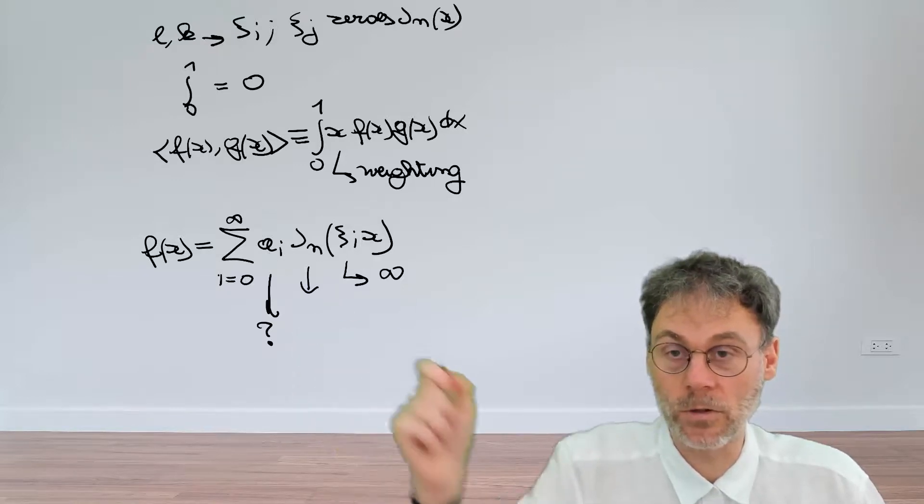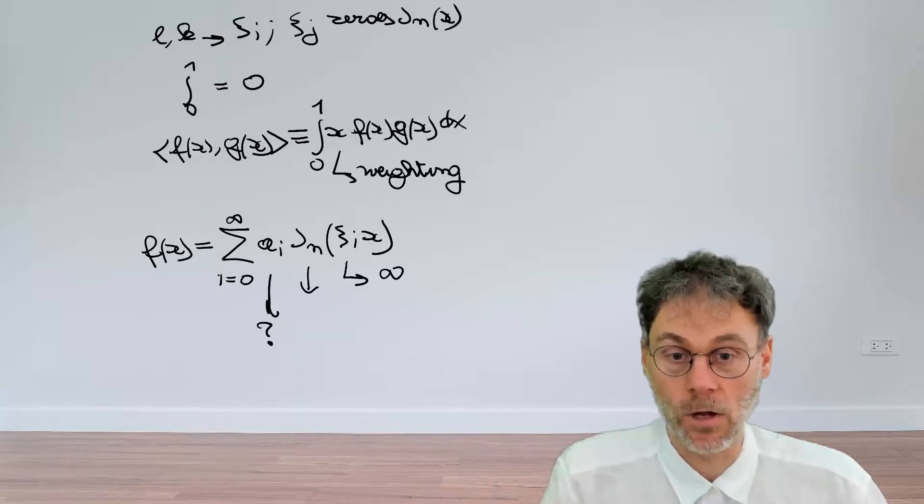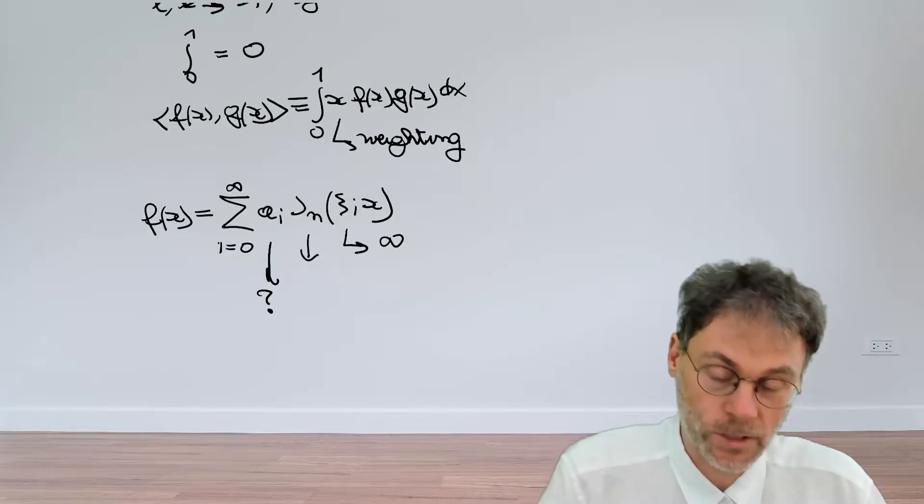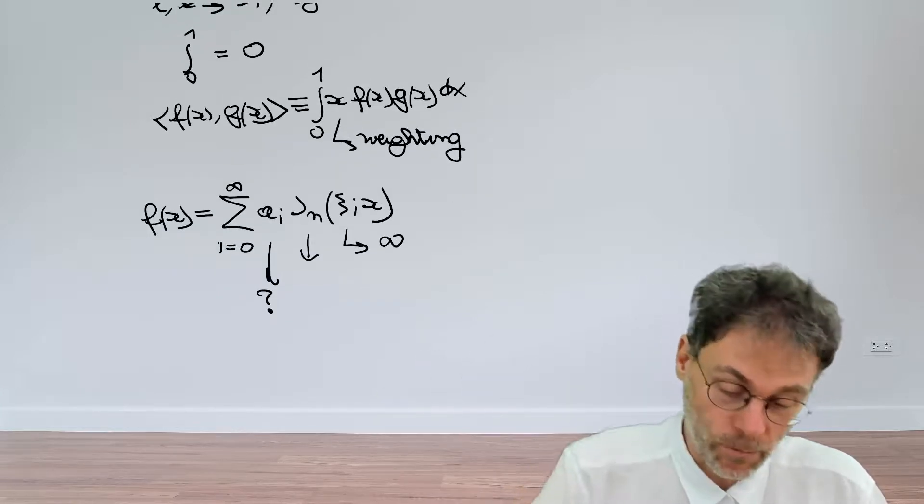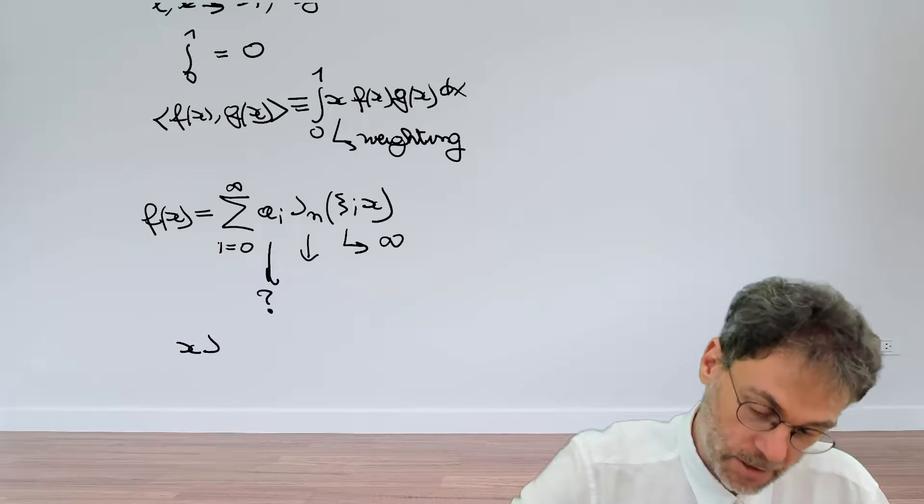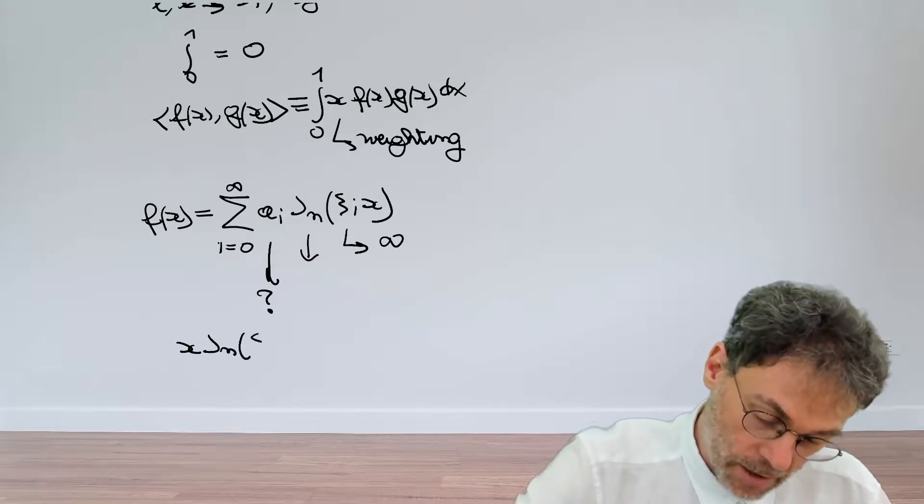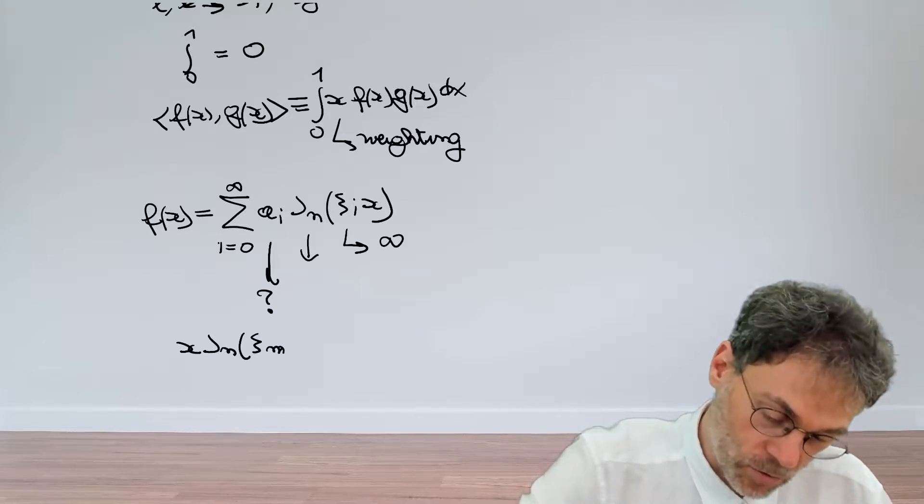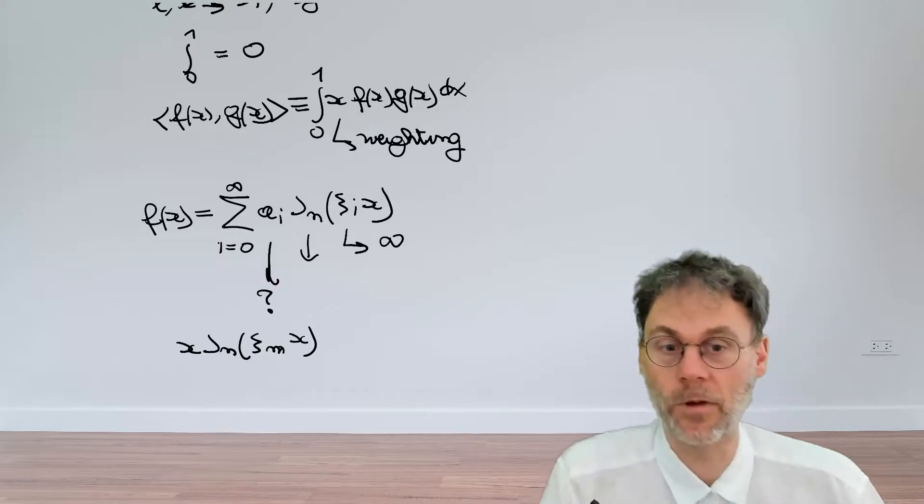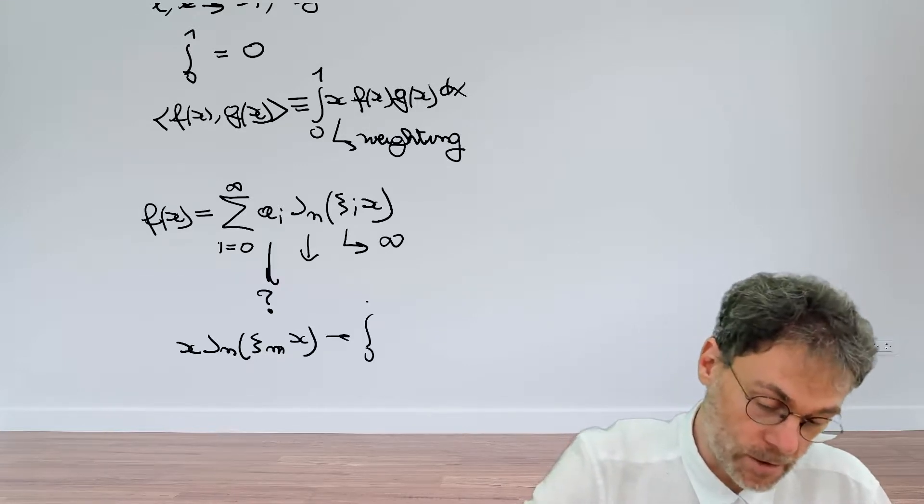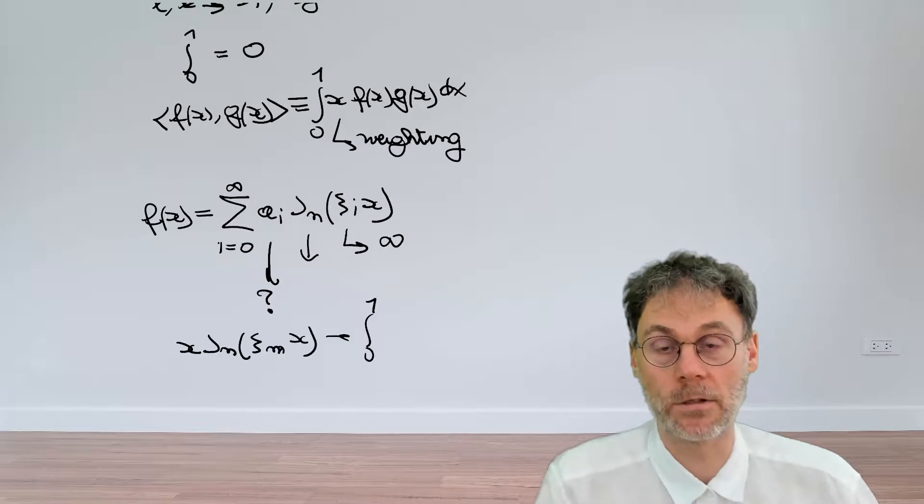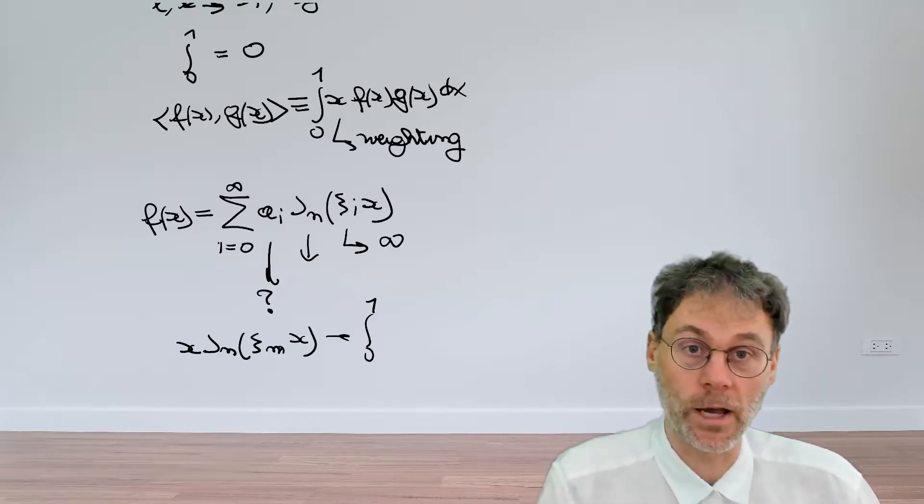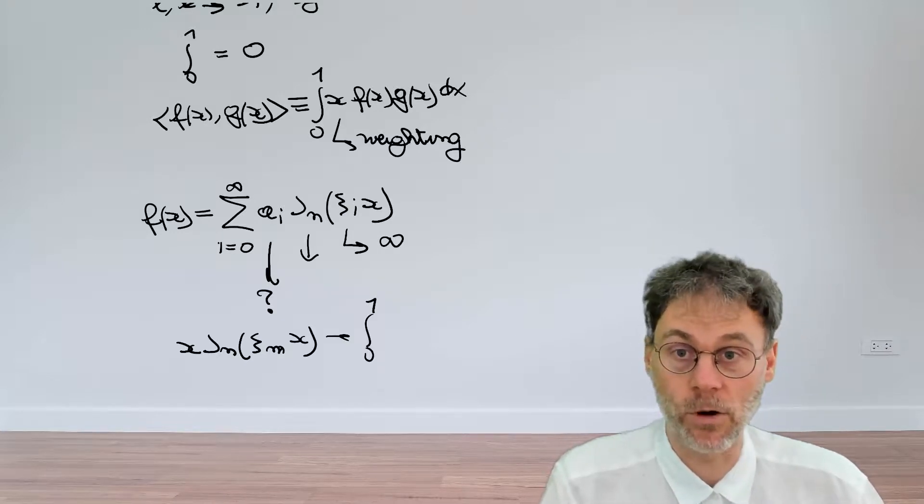So how are we going to find out what these a's are? Well, the thing we're going to do is we're going to take that expression, multiply that by x J_n of a different basis function that's called ξ_m of x, and then integrate the whole thing between 0 and 1 and see what happens. So pause the video here and implement these particular operations.